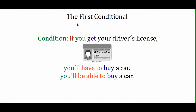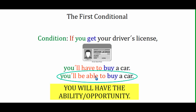Now let's try to complete these first conditionals. The condition is: 'If you get your driver's license,' and we need to choose between 'you'll have to buy a car' or 'you'll be able to buy a car.' If you have a driver's license, is someone going to force you to buy a car? No, it's your decision. But you will have the opportunity or the ability — so: 'If you get your driver's license, you'll be able to buy a car.'